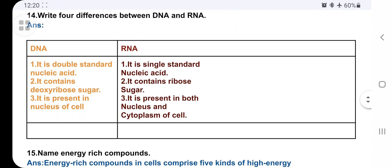Write the differences between DNA and RNA. DNA is a double-stranded nucleic acid; RNA is a single-stranded nucleic acid. DNA contains deoxyribose sugar; RNA contains ribose sugar. DNA is present in the nucleus of the cell, while RNA is present in both the cytoplasm and the nucleus.